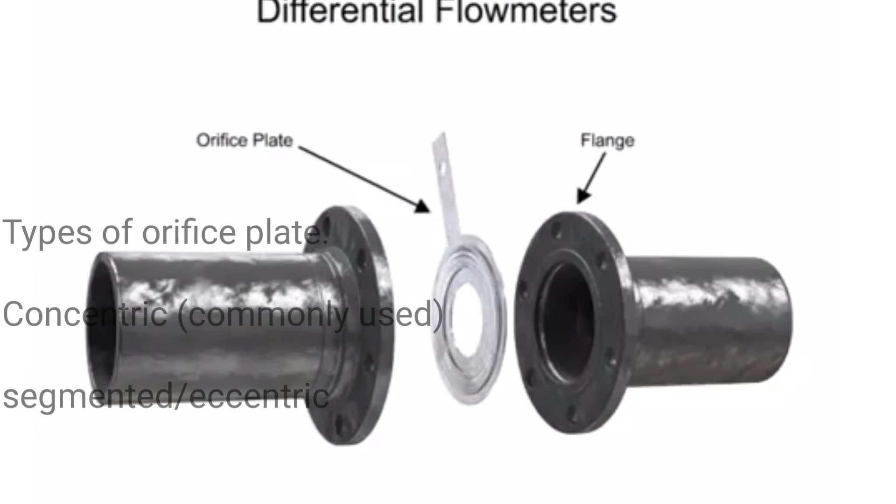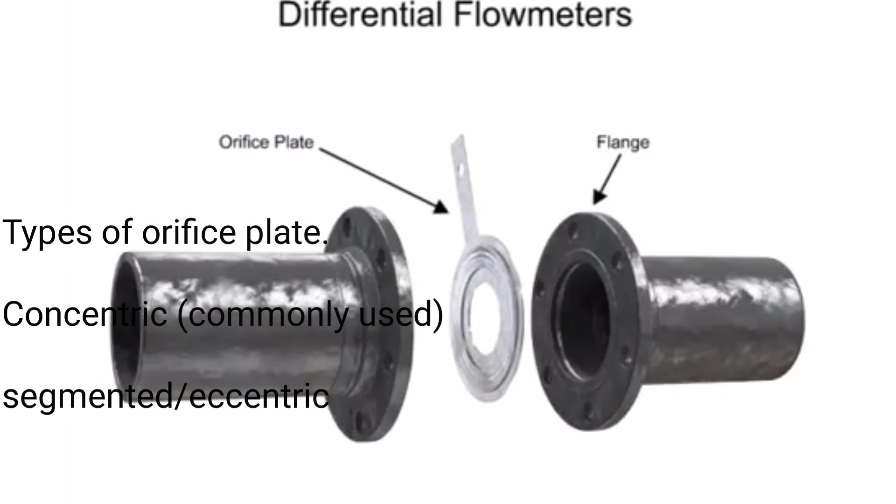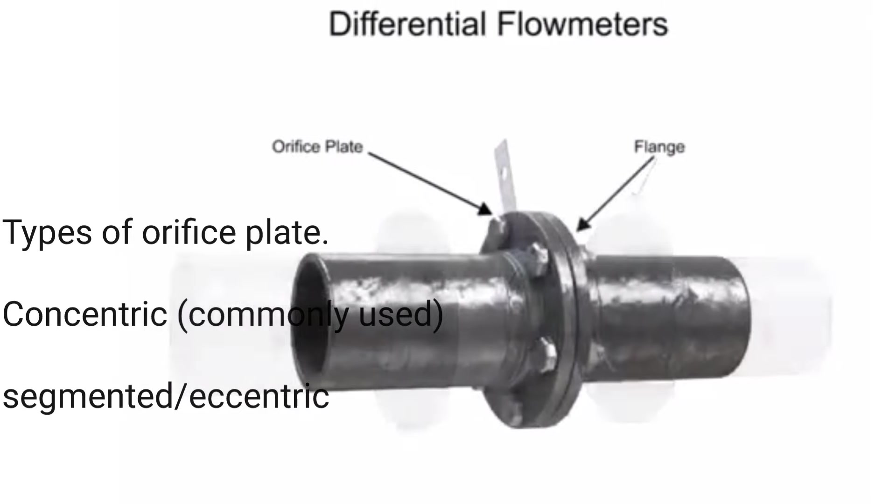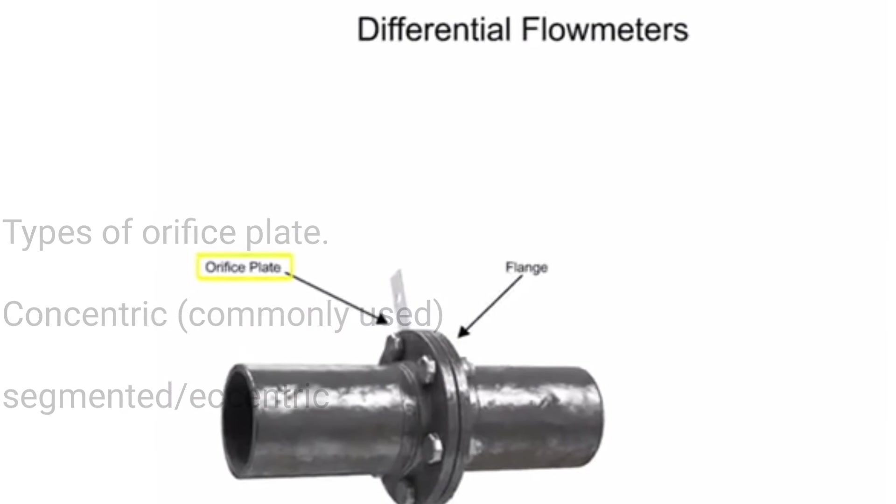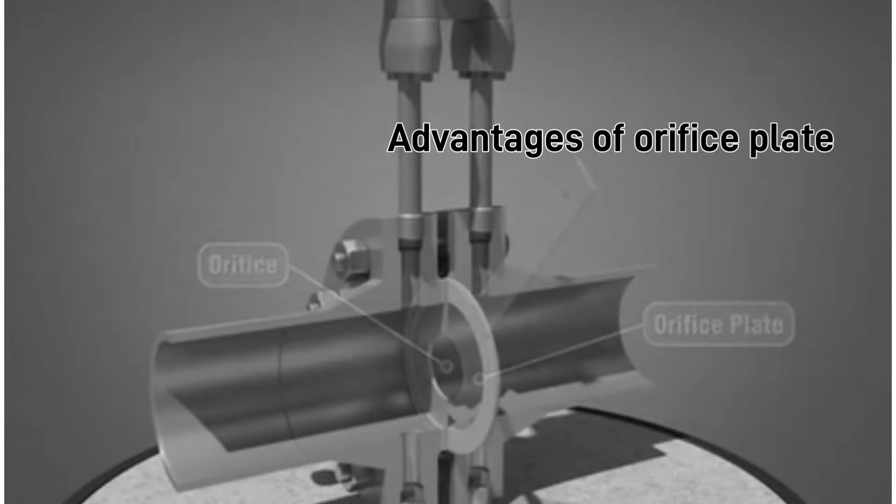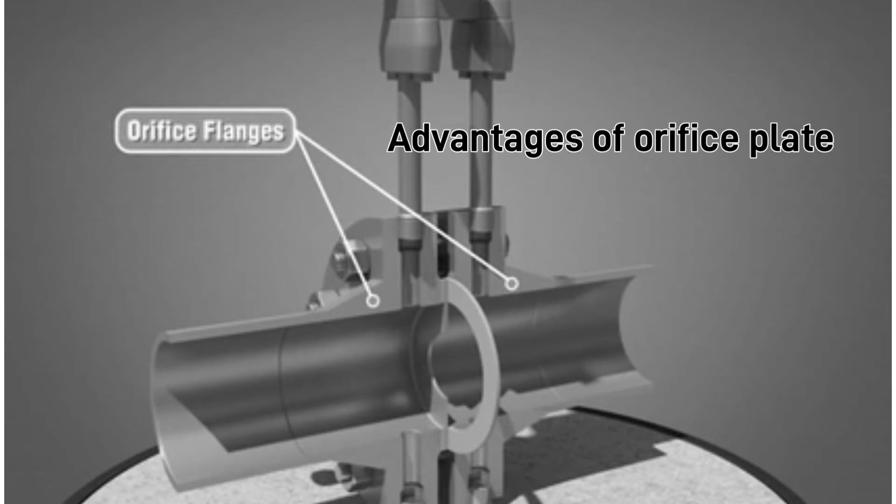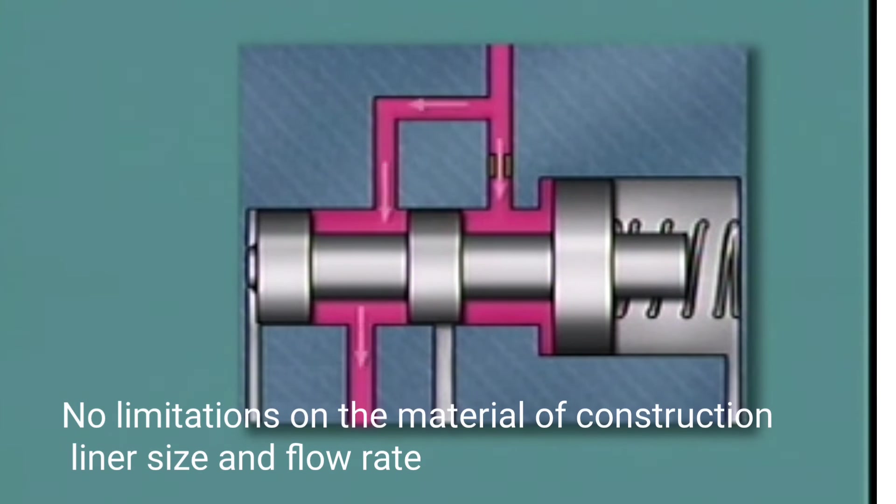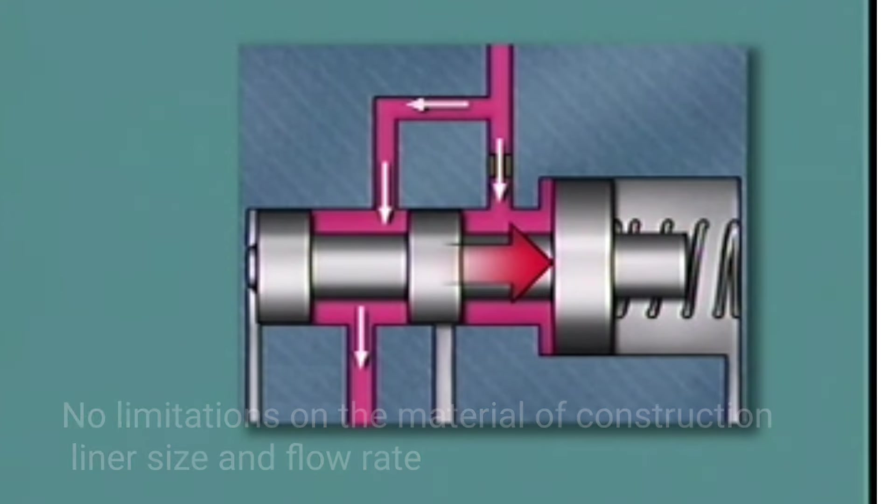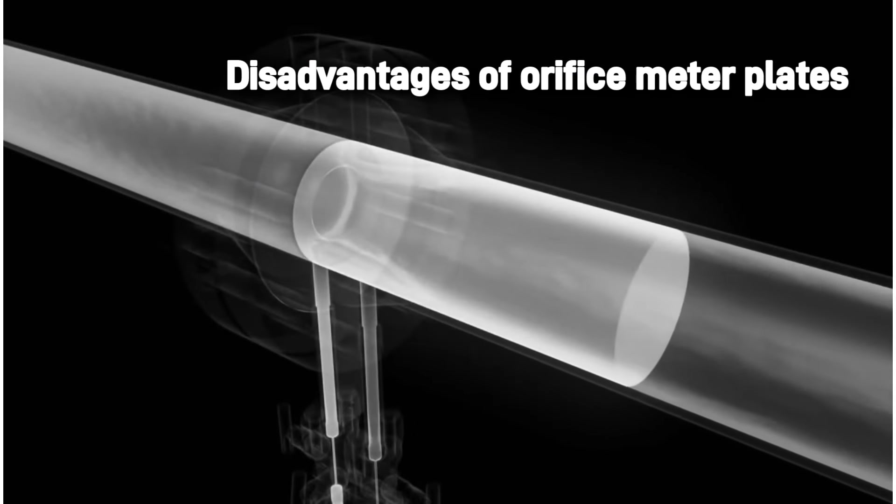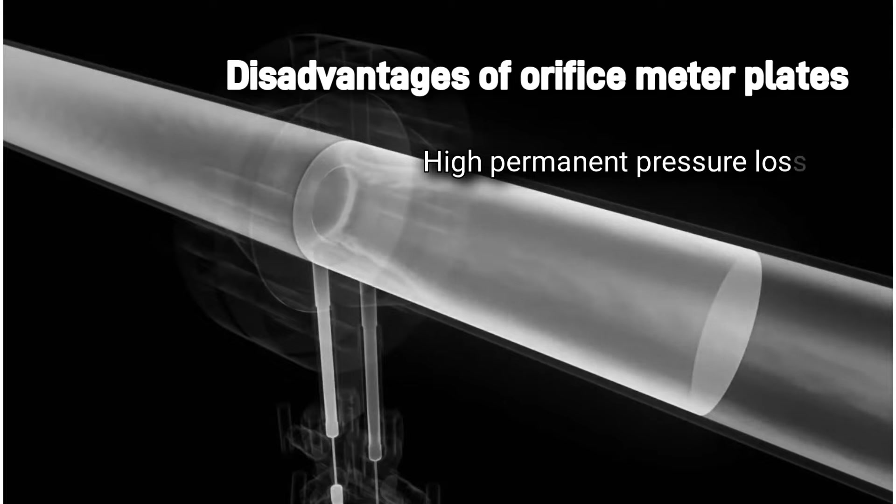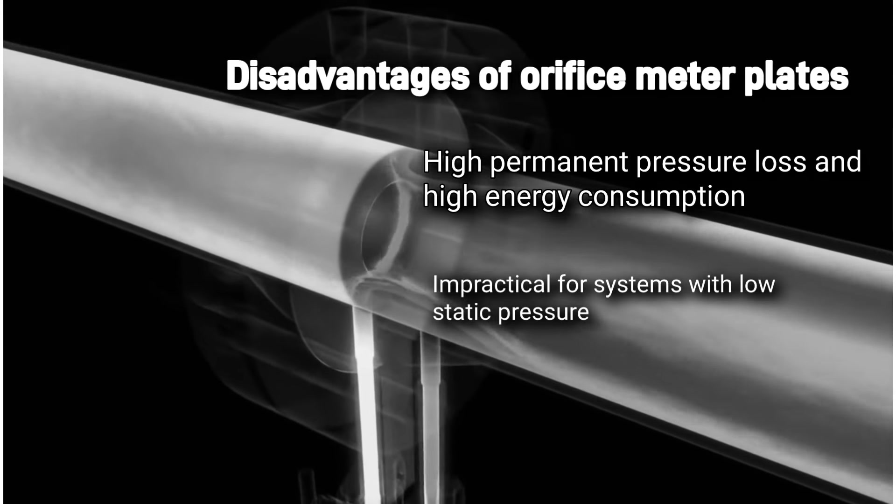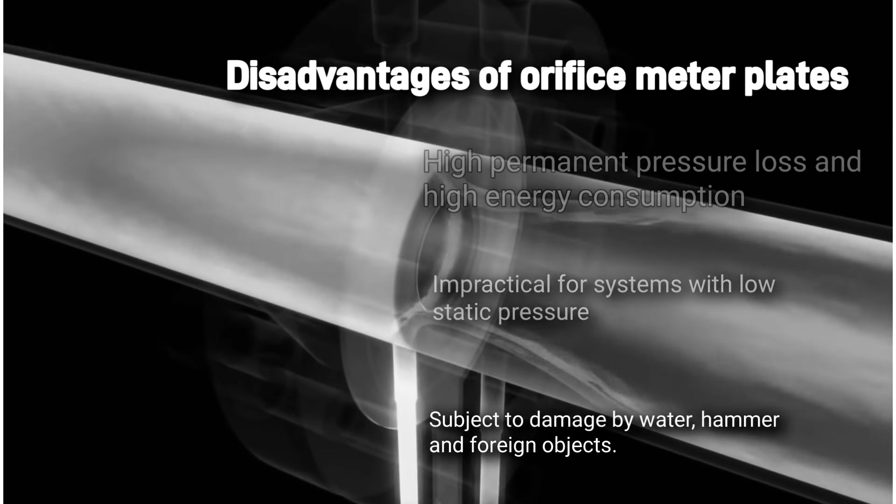Orifice meter plates. There are two types of orifice plates: concentric orifice plates, which is the most commonly used, and segmented eccentric orifice plates, which is used for fluids containing suspended solids. Advantages of orifice plates: they are easily installed between flanges, the fabrication is simple and inexpensive, no limitations on the material of construction, liner size, and flow rate. Disadvantages: high permanent pressure loss and high energy consumption to overcome pressure loss, impractical for systems with low static pressure, subject to damage by water hammer and foreign objects.